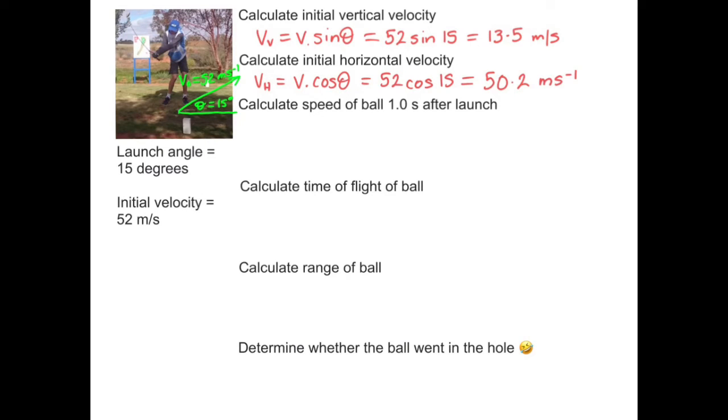The next part asks us to calculate the speed of the ball after one second. Note that it just says speed there, so we don't need to worry about the direction in this case. That's quite common in tests and exams to just ask for the speed. So firstly, the horizontal speed of the ball stays constant. It doesn't change. That's equal to 50.2 metres per second.